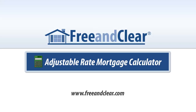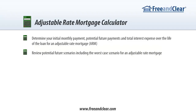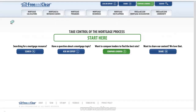We're going to review the FreeAndClear.com Adjustable Rate Mortgage or ARM calculator, which is a mortgage calculator that allows you to determine your initial monthly payment, potential future payments, and total interest expense over the life of an adjustable rate mortgage. The FreeAndClear ARM calculator also enables you to review potential future scenarios including the worst case scenario for an ARM.